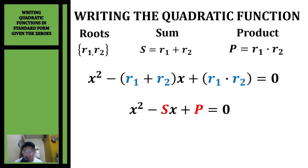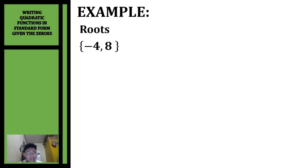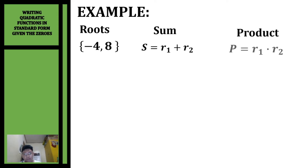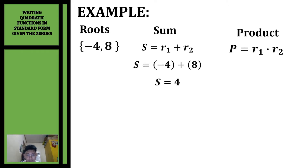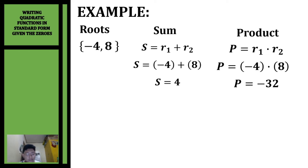Let's have some examples. We're going to write the quadratic function given the roots negative 4 and 8. We need to get the sum and the product of the given roots. So let's add: negative 4 plus 8 gives a sum equal to 4. Now the product: negative 4 times 8 gives a product of negative 32.